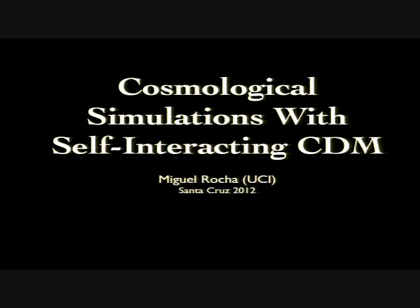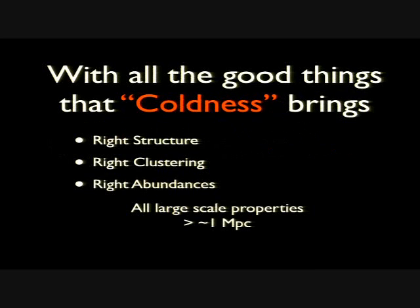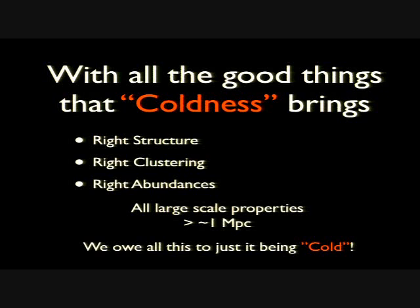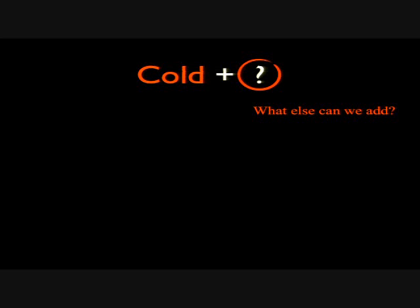The reason is that I really want to pass the message that this is called dark matter, and as such, it comes with all the good things that CDM brings — right structure, right clusters, right abundances of halos. All these large-scale properties that we have verified observationally have made us fall in love with standard CDM. However, all these properties we owe to it just being cold, and one may wonder what else we can add to this property of being cold without violating observational bounds.